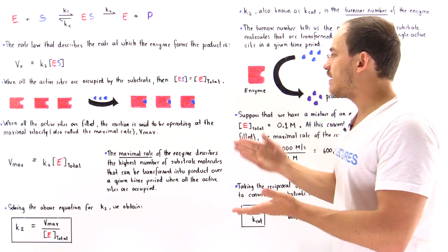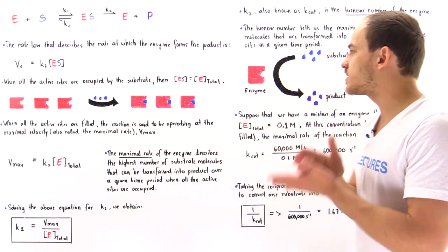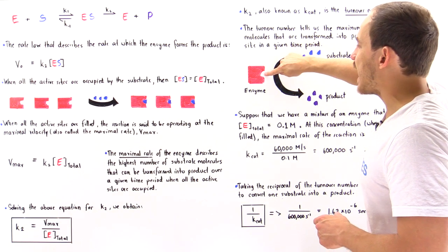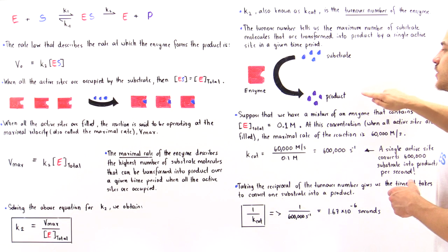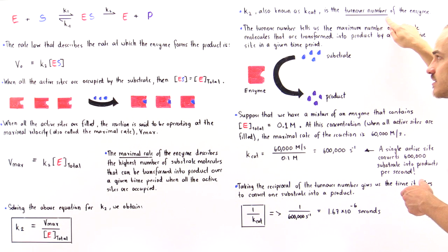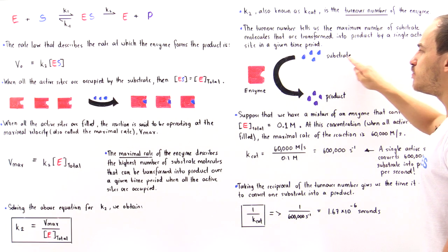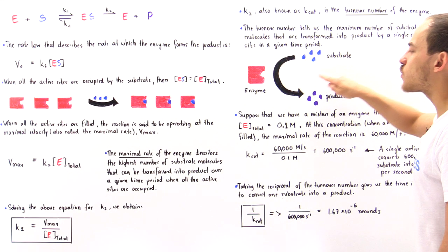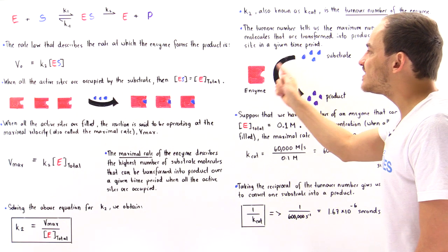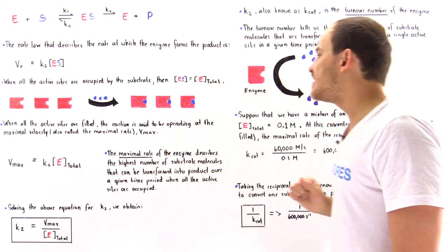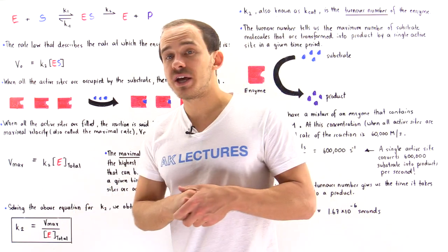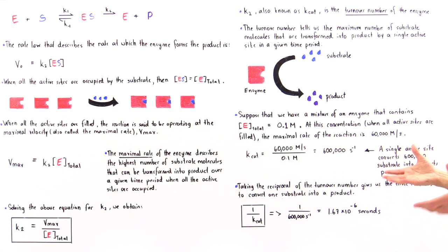To illustrate: consider a single enzyme found in our body with its active site. The turnover number tells us the total number of substrate molecules that can be transformed into product molecules per unit time — for example, per second — when only a single active site of a single enzyme is being used. Let's look at a hypothetical example to calculate the K2 value.